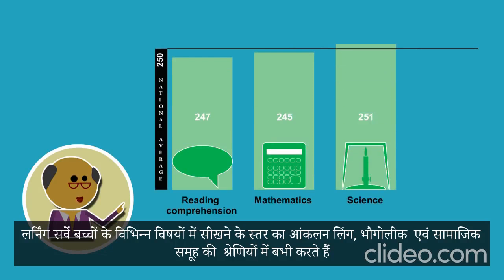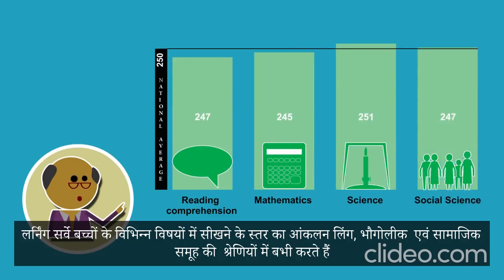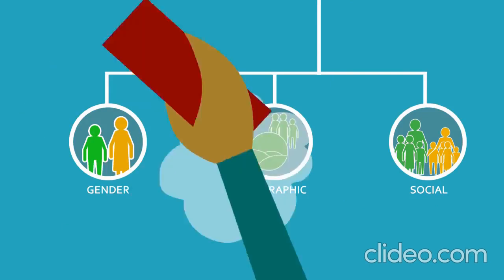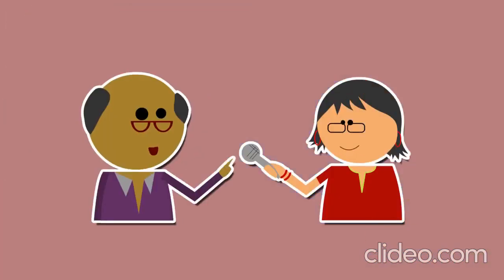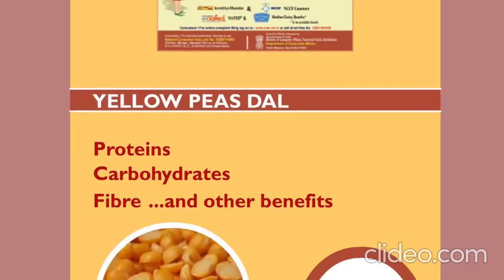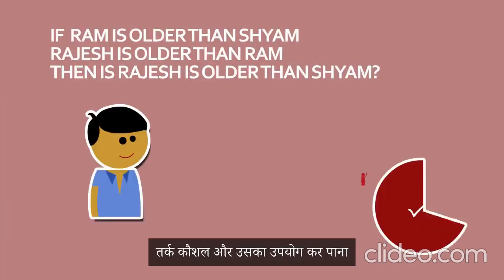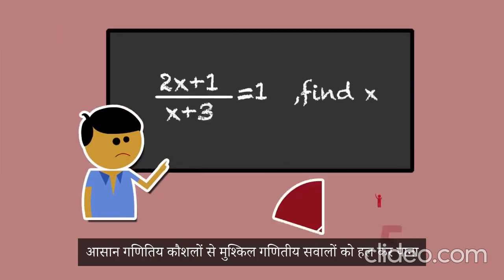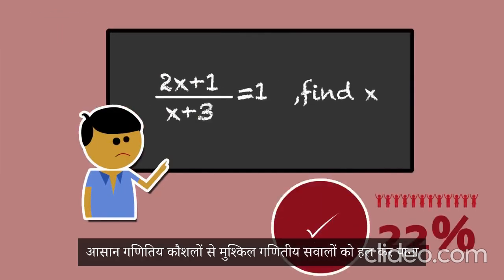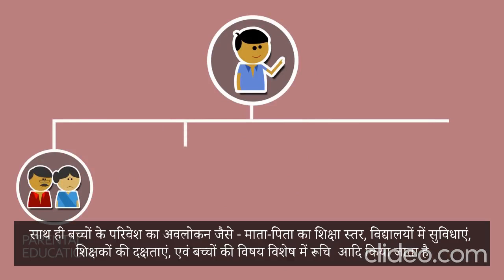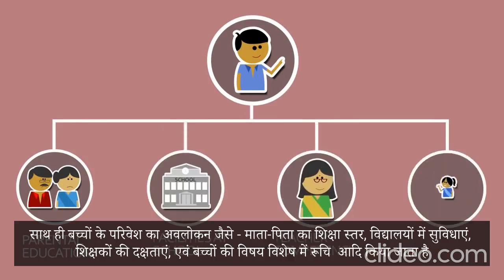Assessment surveys are like a health check of the education system, as they provide information on students' learning levels in different subjects, categorized by gender, geographic, and social groups. The learner assessments show what students know and can do in specific subject areas, covering simple to more complex learning — such as extracting information from text, application and reasoning skills, completing simple calculations in mathematics, to solving complex mathematical problems.